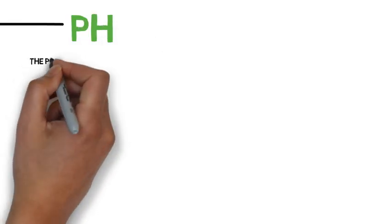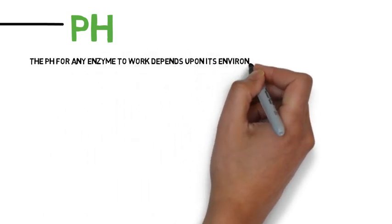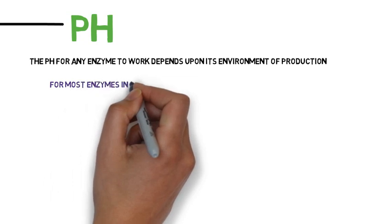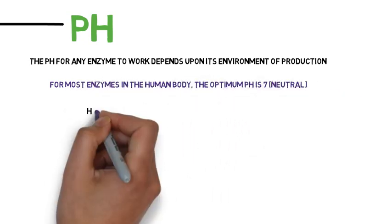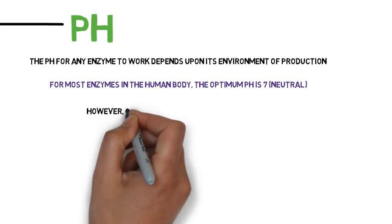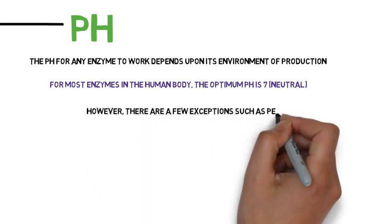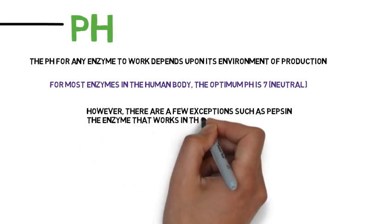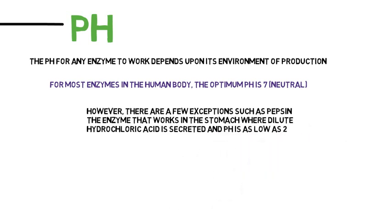pH: the pH for any enzyme to work depends upon its environment of production. For most enzymes in the human body, the optimum pH is 7, neutral. However, there are a few exceptions, such as pepsin, the enzyme that works in the stomach where dilute hydrochloric acid is secreted and the pH is as low as 2.